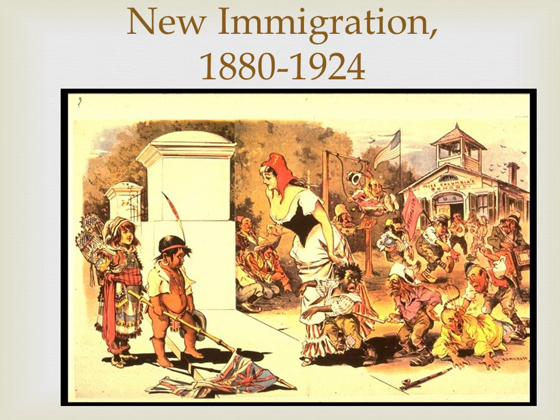After 1880 we see a huge influx of new peoples coming in — peoples that today we wouldn't even think of as immigrants, but at the time would have been very different cultures. It ends in 1924, and as we'll see at the end of this lecture, that's a hard deadline — something happens that year that really ends immigration.